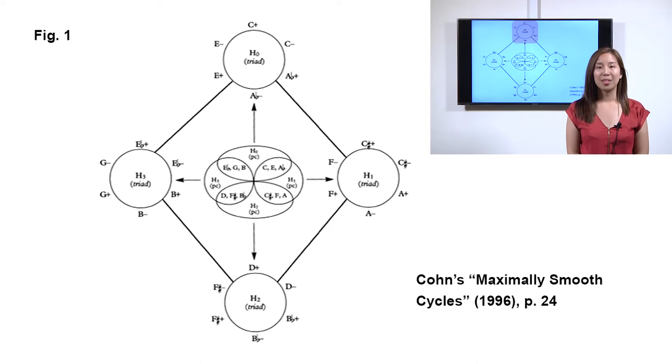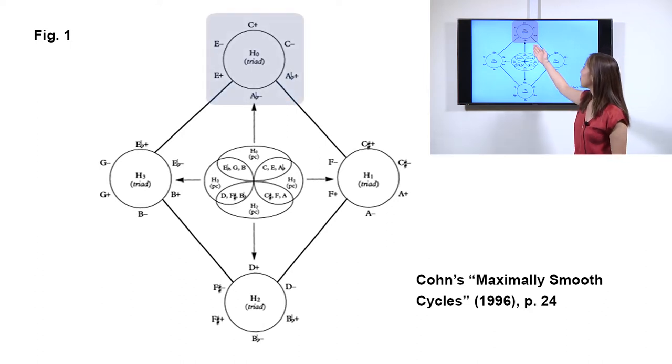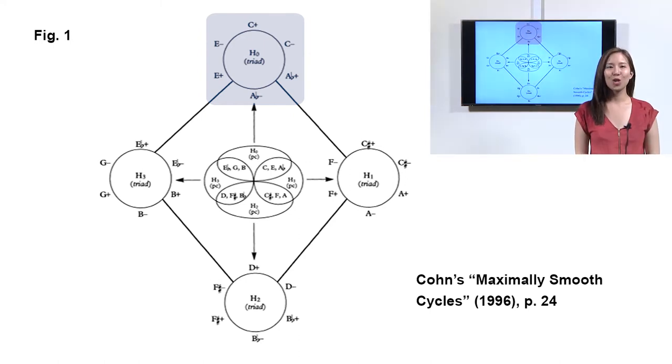Cohn points out that consonant triads can form an MS cycle by alternating between P and L transformations. The cycle featured in the Brahms example is one of the four co-cycles that symmetrically partition the 24 consonant triads. All four co-cycles are shown in Figure 1. The co-cycle we have discussed is at the top of the system.